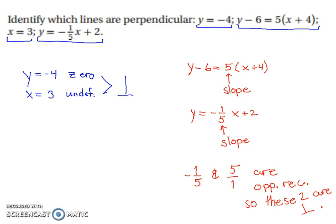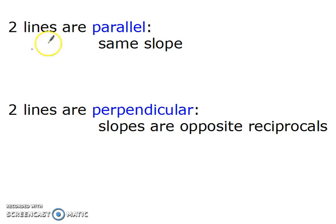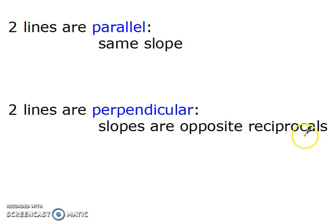Quick recap: two lines are parallel if they have the same slope. Two lines are perpendicular if their slopes are opposite reciprocals. You'll need that for the next two problems.